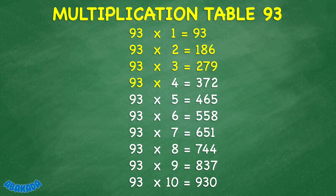93 times 4 equals 372. 93 times 5 equals 465. 93 times 6 equals 558. 93 times 7 equals 651. 93 times 8 equals 744. 93 times 9 equals 837. 93 times 10 equals 930.